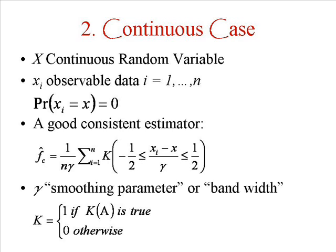As before, the indicator function can assume only two values. One, if K(A) is true, our assumption is true. The assumption is that the difference between our observed data and the actual value is less than a given parameter or zero otherwise.